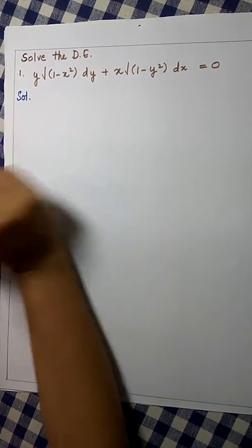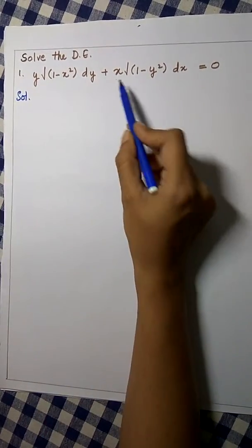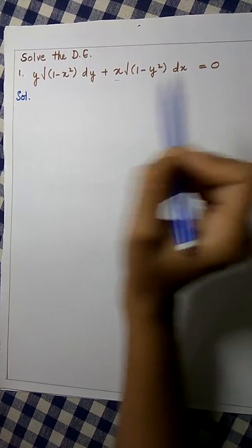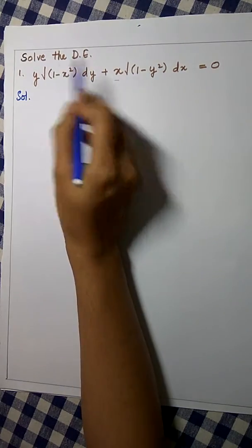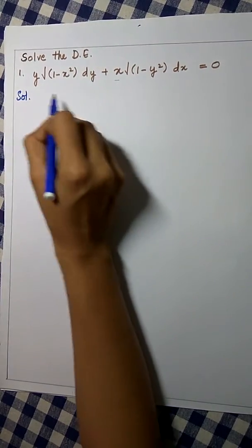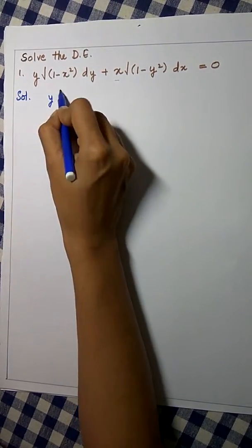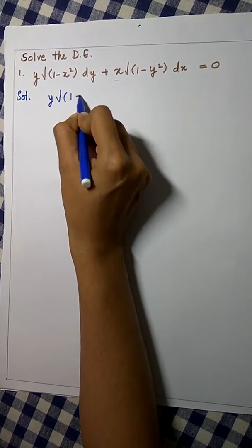To solve this equation, first we will take this term to the other side of the equation, so that it will be easy for us to separate the variables of x and y.